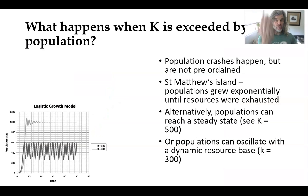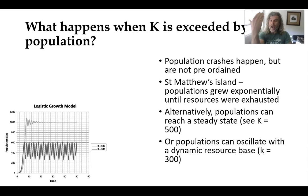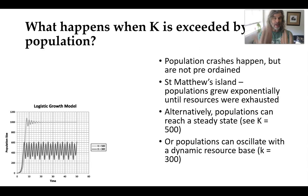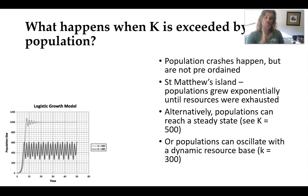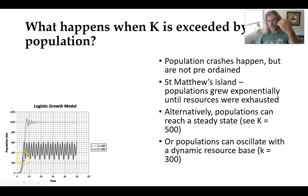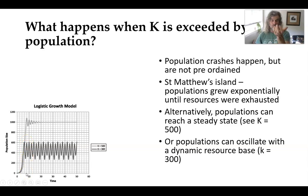What happens when carrying capacity — that's the parameter K in our model — is exceeded? Well, populations crash. It's not preordained that they will crash, but it does happen sometimes. The St. Matthew's Island reindeer population is an example of that. What happened in that case was that the population exceeded the carrying capacity so much that during the correction, the population of reindeer actually went extinct.